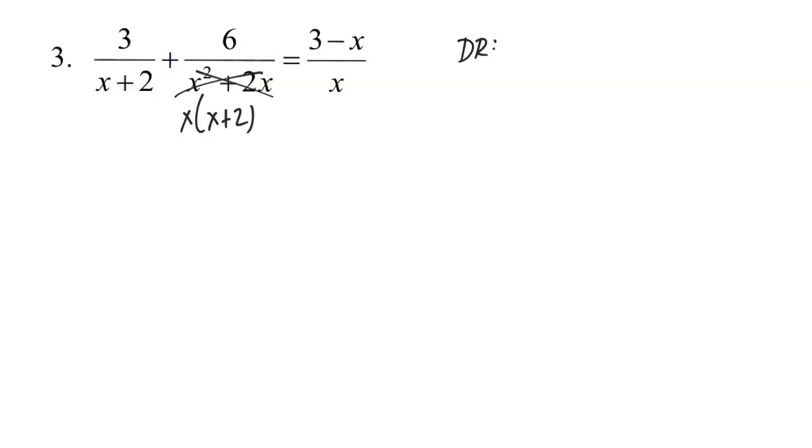And so therefore, my domain restrictions are going to be that x cannot equal negative 2. That comes from this denominator and that denominator's factor. And then from this other denominator, which just says x, we get that x cannot equal 0.